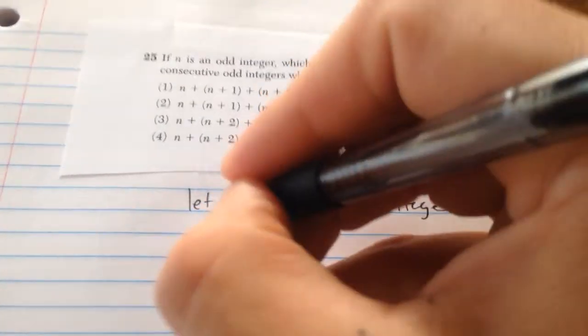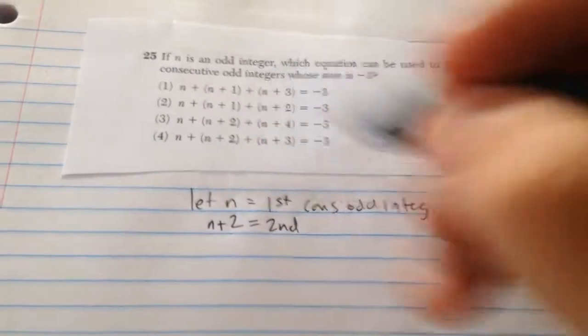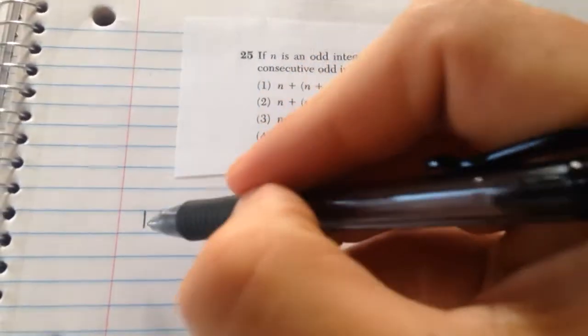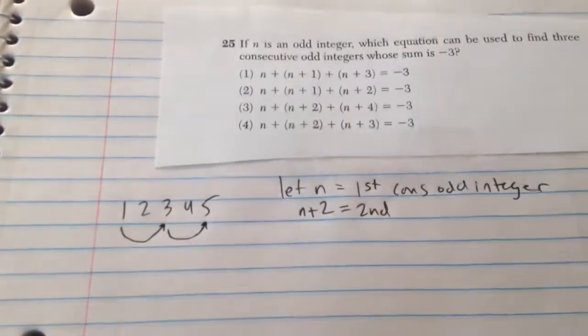We're not going to say n plus 1, but we're going to say n plus 2. I understand that 2 is even, but because there's basically adding 2 to get to the next odd integer, this is why we use that number.